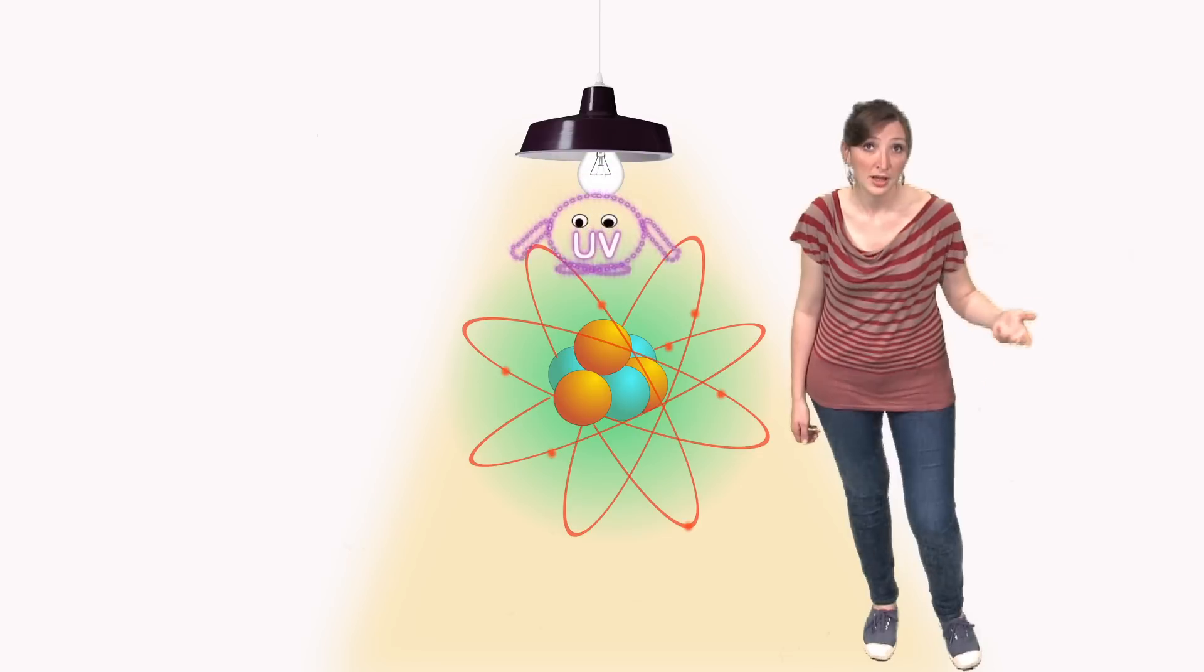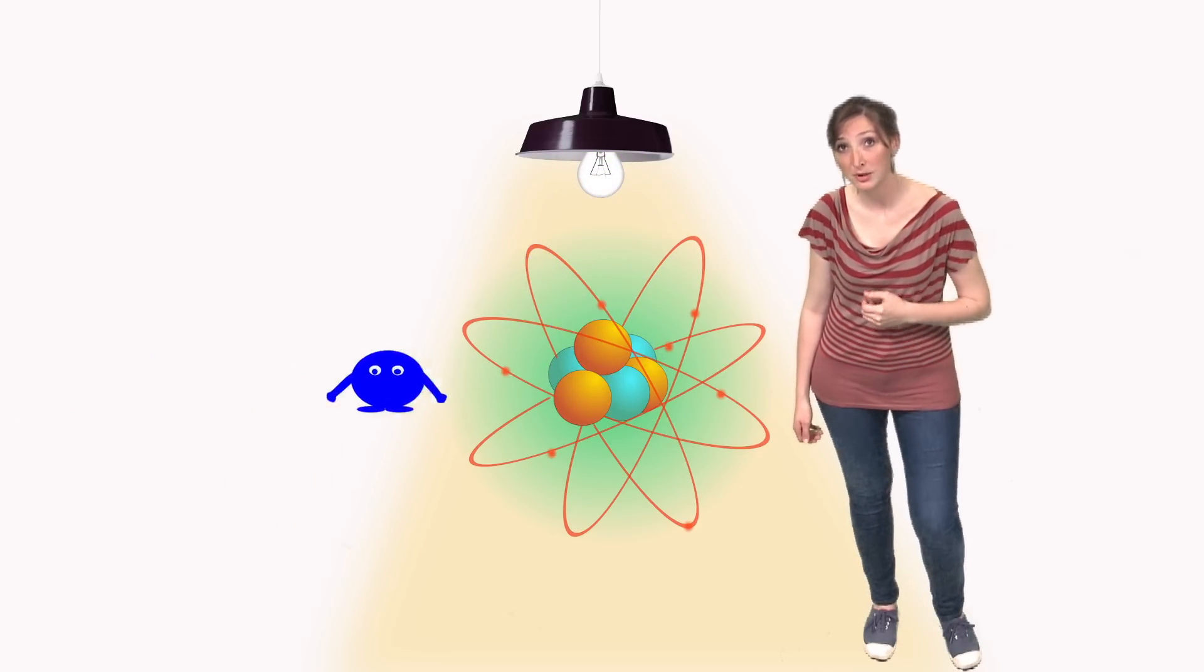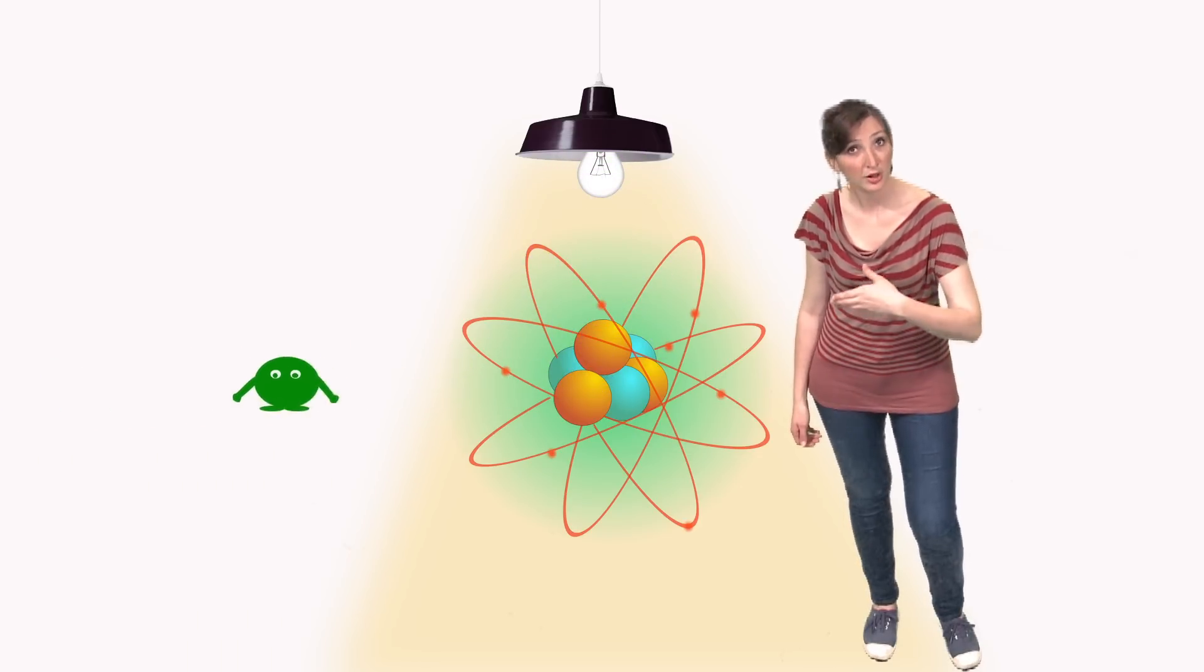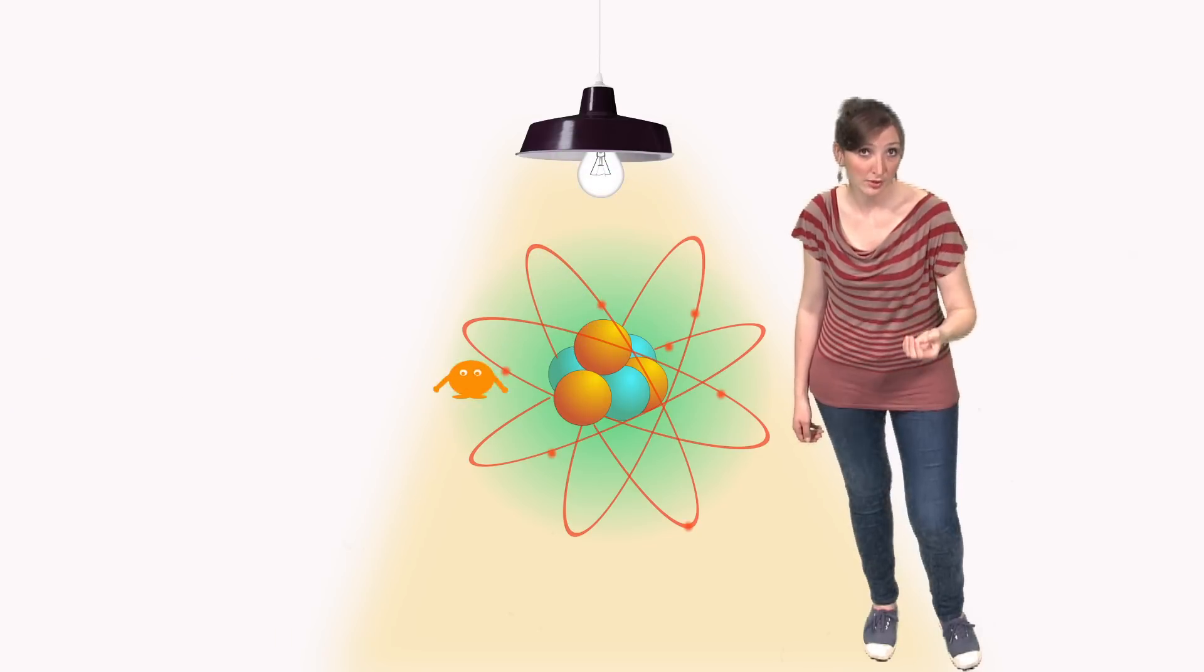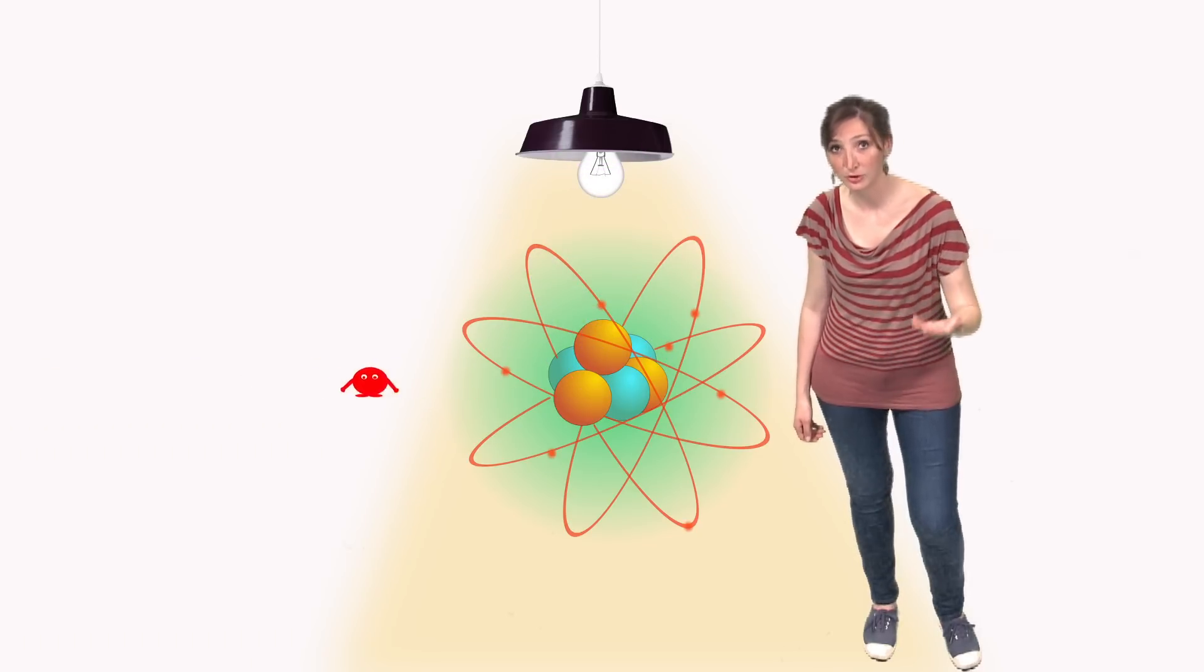On the other hand, an atom absorbing an ultraviolet photon will be able to re-emit a photon of whatever color the eye can perceive, since these colors are less energetic than ultraviolet.